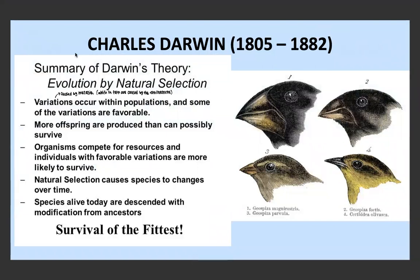Darwin's theory of natural selection states that variations occur within a population, and only some of these variations are favorable. These variations are caused by mutation, crossing over, and independent assortment — the most important being mutations. More offspring are produced than can possibly survive, so these organisms compete for resources. Those with the favorable variations are more likely to survive. Natural selection causes species to change over time, and species alive today are descended with modification from ancestors. Those with favorable mutations are more likely to survive to sexual maturity, pass on their variations, and over time a larger proportion of offspring carry this favorable trait until eventually all offspring have it.